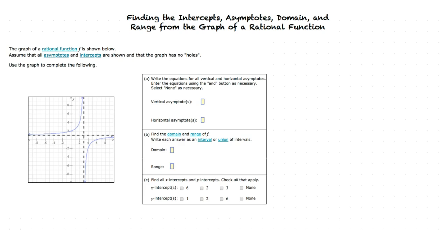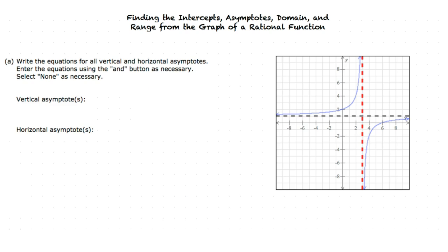In this example, we are asked to analyze the graph of a rational function shown below, and use the graph to determine the vertical and horizontal asymptote, domain and range, and x and y-intercepts. Following the same process as before, let's look for the vertical asymptote. The graph approaches x equals 3 from both sides but never fully touches x equals 3, so x equals 3 is our vertical asymptote.